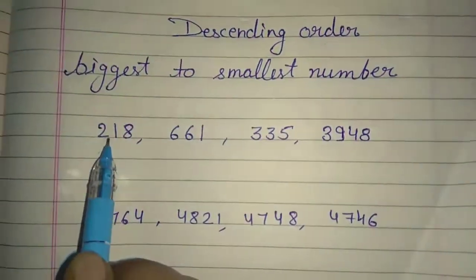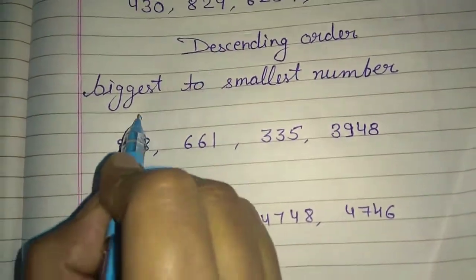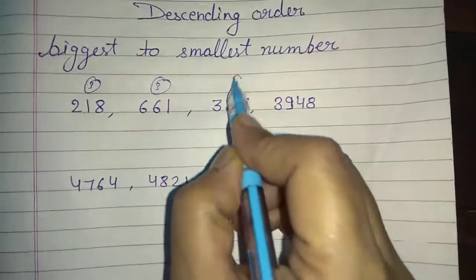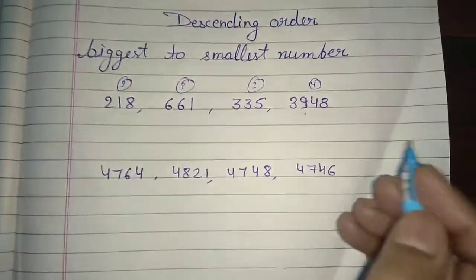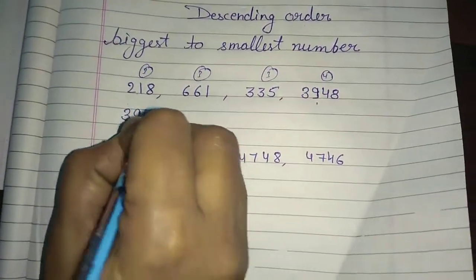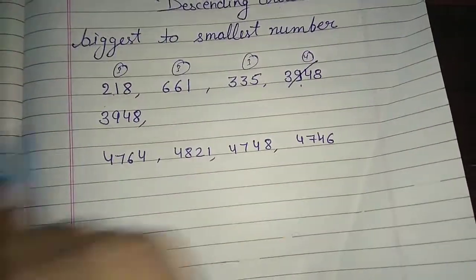Now you see the same numbers. This also has 3. 3 digits. This is also 3 digits. This 3 digits and this 4 digits. So obviously, 4 digits will be what? Biggest number. So 3948.